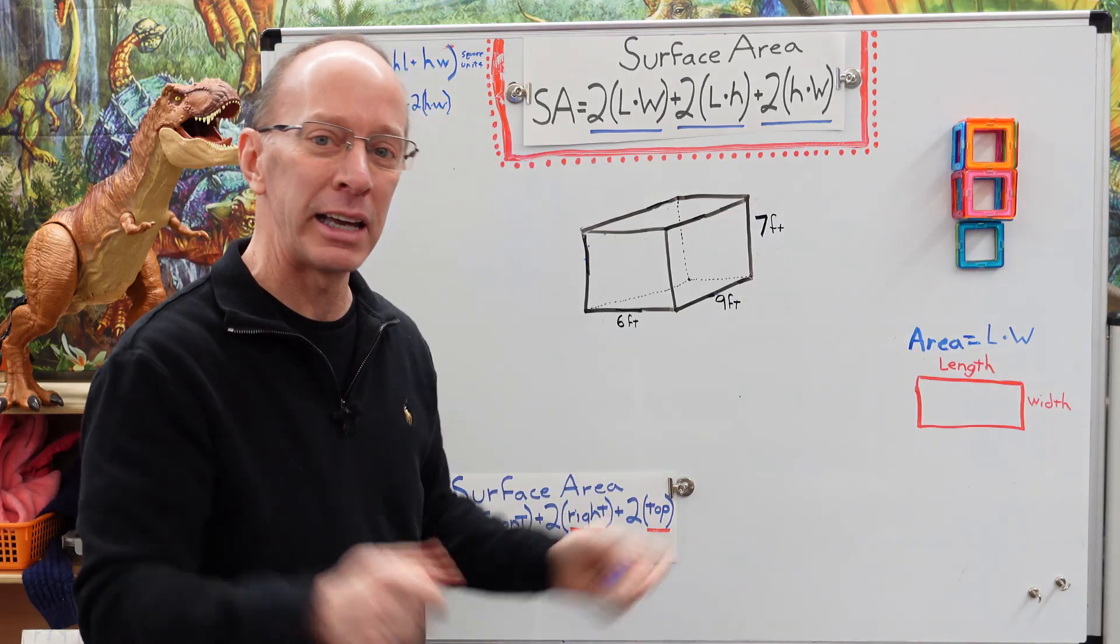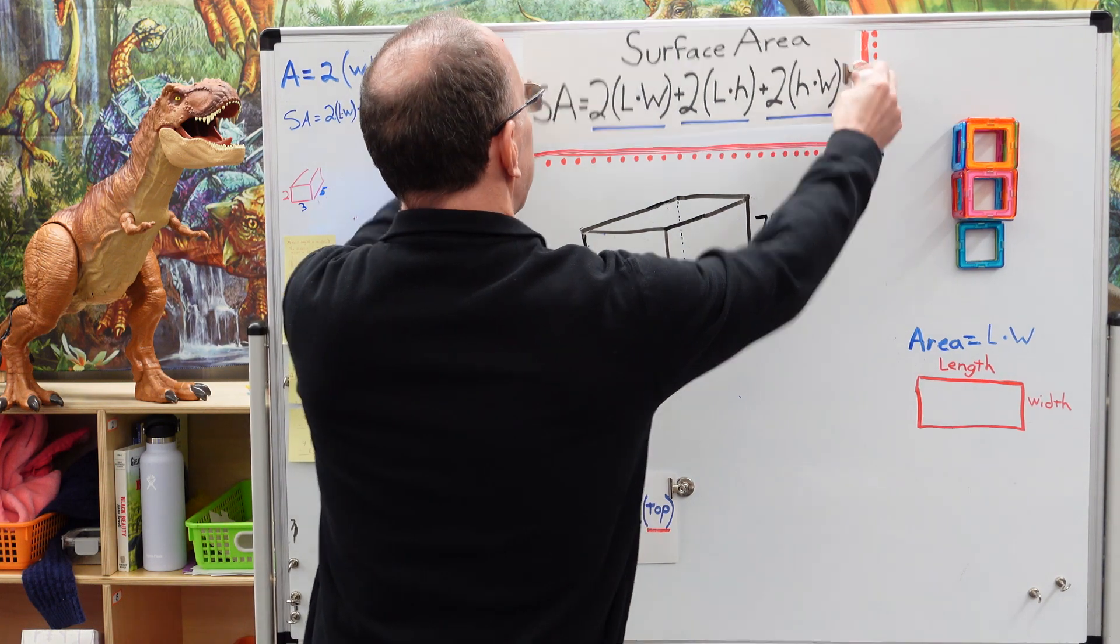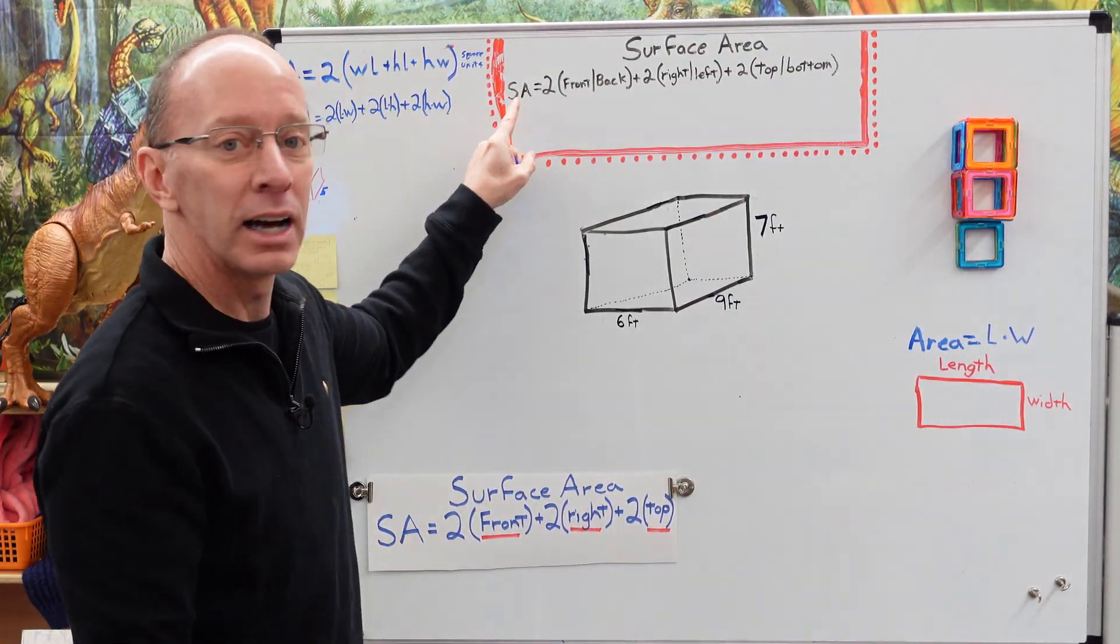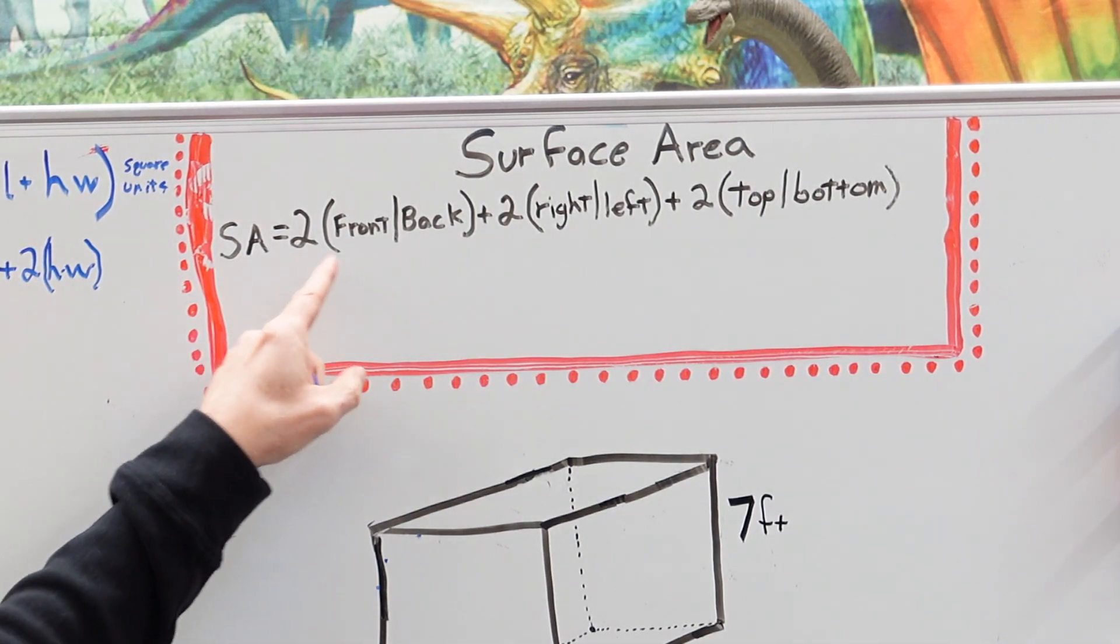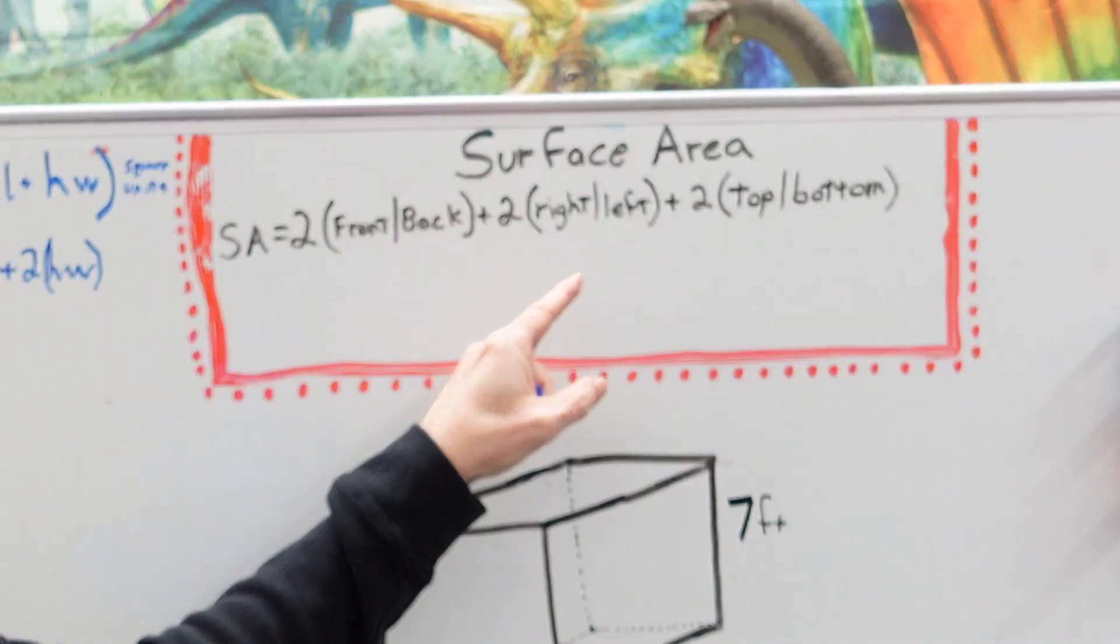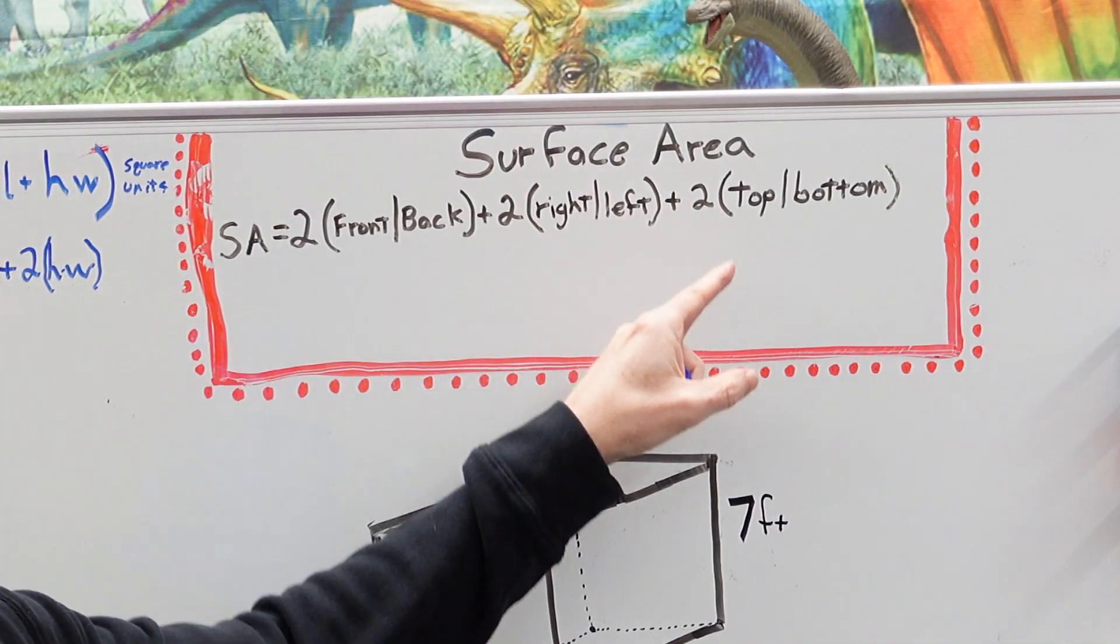I kind of made a little easier formula and that is this formula right here. It is surface area equals two times the front or the back plus two times the right or the left plus two times the top or the bottom.